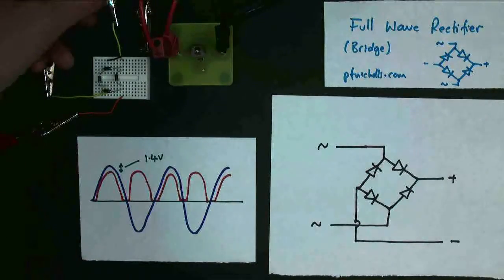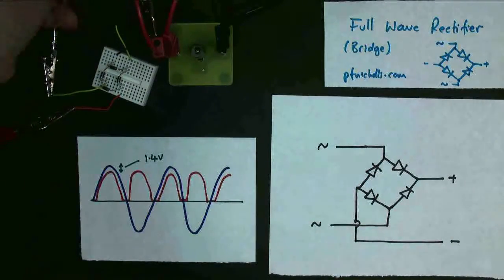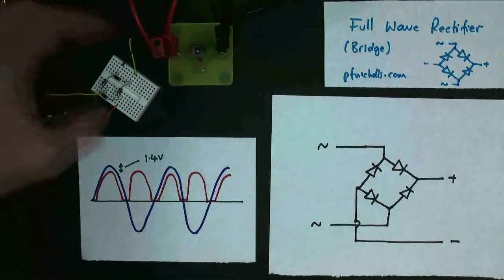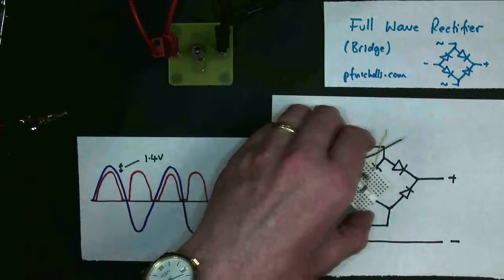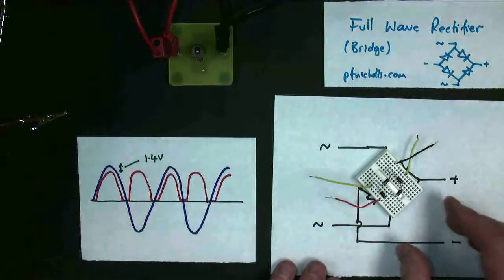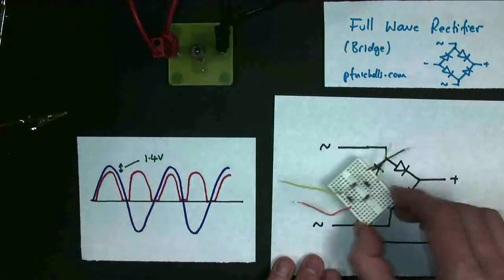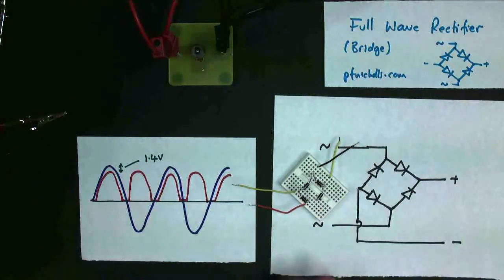And if I just disconnect my little rectifier up here, which will stop the bulb from working, and I take all these crocodile clips off, I hope you can see that what I've drawn is exactly what I was using. There it is. Four little diodes. So you need to be able to draw that.